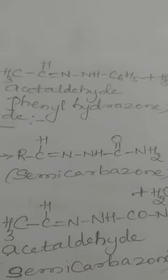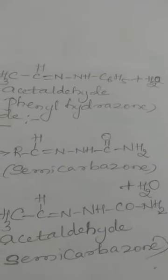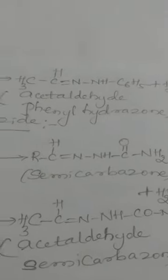Taking acetaldehyde CH₃CHO with phenylhydrazine: O and H₂ are eliminated as water, and the product formed is CH₃CH=N–NH–C₆H₅ plus H₂O — acetaldehyde phenylhydrazone. This is the third condensation reaction.